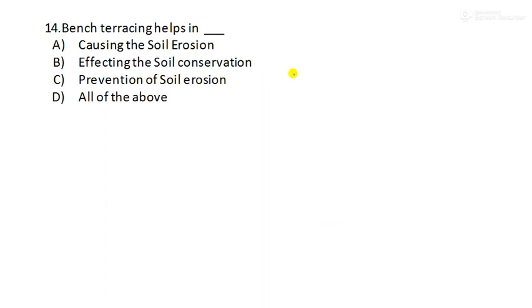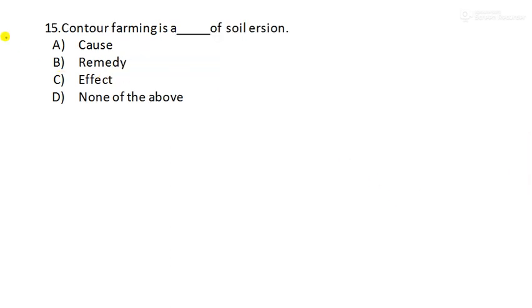Next question. Bench terracing helps in blank. So I will give this as a homework for you. Without looking in the comment section, without looking for the answer in the comment section, type your answer. If you know it, also take this question as homework. Don't look for the answers in comment section. Solve it by yourself. Contour farming is a blank of soil erosion. What is contour farming? Whether it is a cause of soil erosion, remedy, effect or none of the above. So you have to answer three questions which I have given as homework.